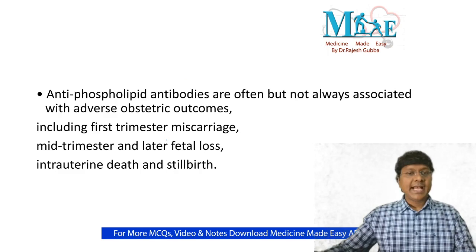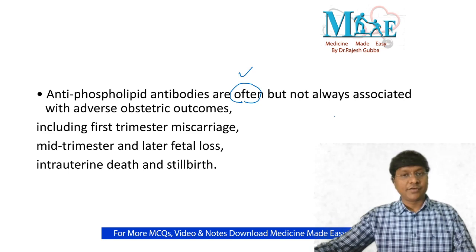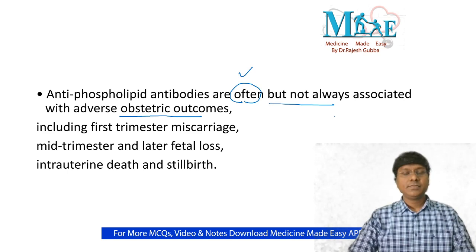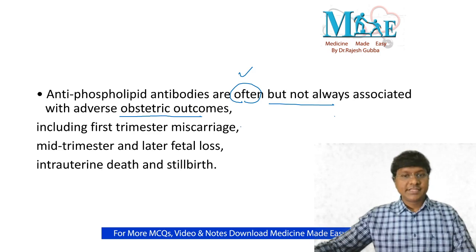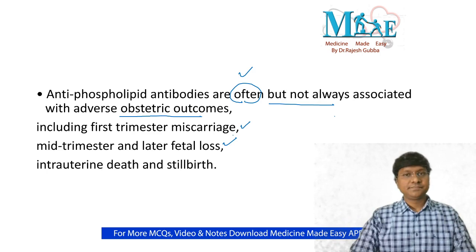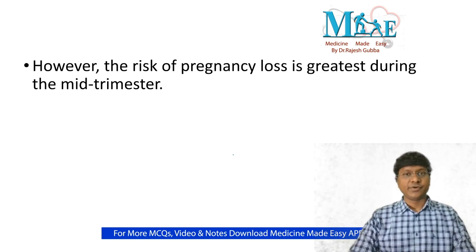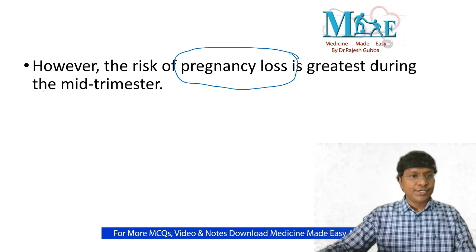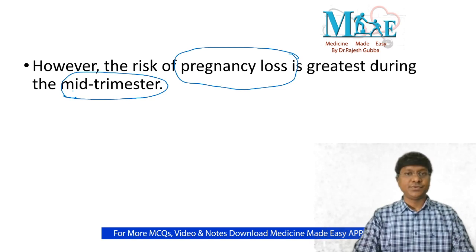APLA antibodies are often, but not always, associated with obstetric outcomes. These include first trimester miscarriage, mid and later fetal loss, intrauterine death, and stillbirth. A very important MCQ point: the risk of pregnancy loss is greatest during the mid trimester in APLA syndrome.